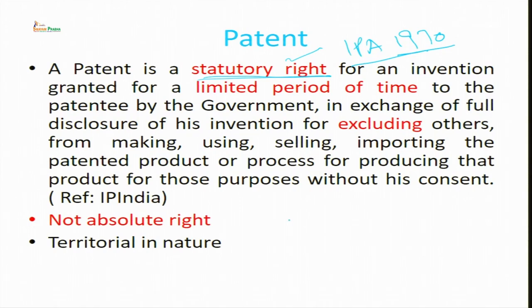Why is this called a statutory right? Because the Indian Patent Act 1970 has made special provisions relating to patent. Although this patent act was passed in 1856 before independence, after the recommendation of Justice Iyengar and Justice Bakshi Tekchand committee, we have a new act called the Indian Patent Act 1970. Although we have provisions relating to compulsory licensing, it is violating the right of the patentee.